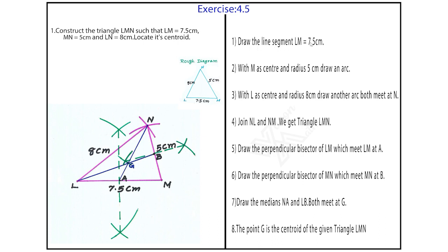Draw the line segment LM equal to 7.5 cm. Second, with M center and radius 5 cm, draw an arc. M center, radius 5 cm, first arc. Next, with L center and radius 8 cm, draw second arc. Both arc meet at point N. Join LN and NM. That is fourth.